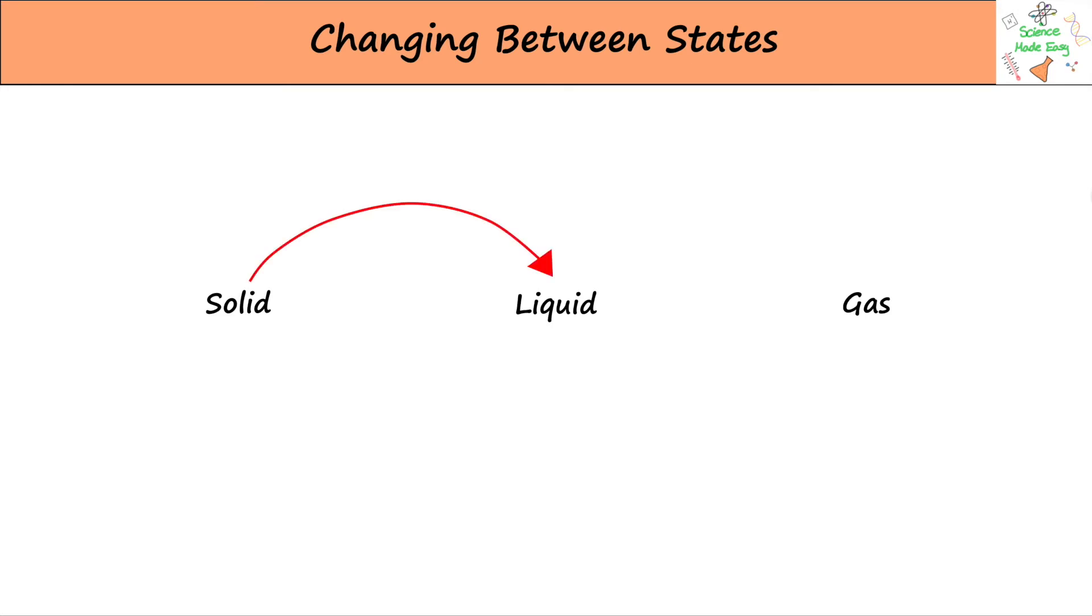The state change between a solid and liquid is called melting, and then between a liquid and gas is called boiling. To go back from a gas to a liquid it's called condensing, and to go from a liquid to a solid it's called freezing.